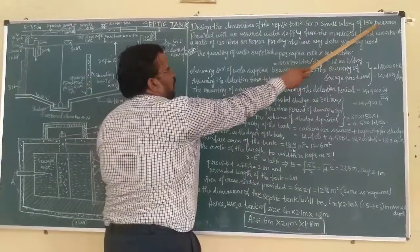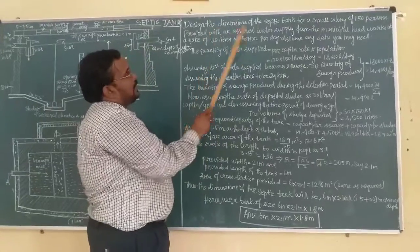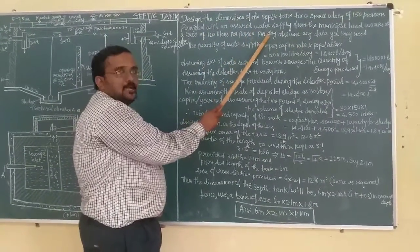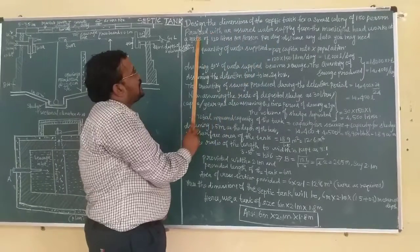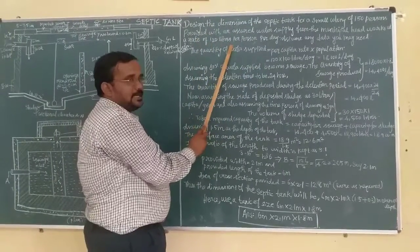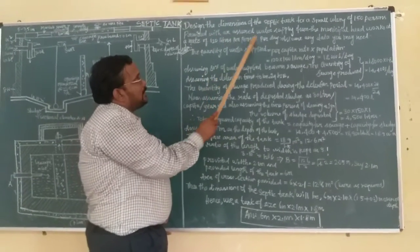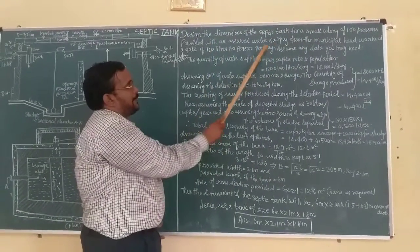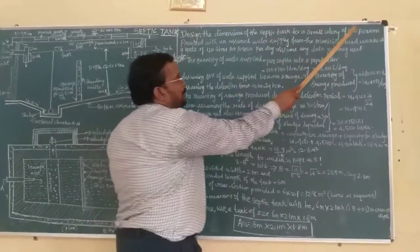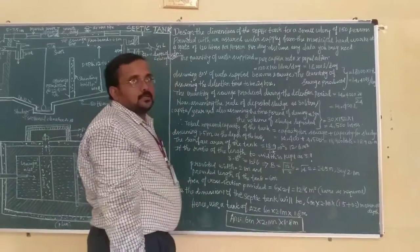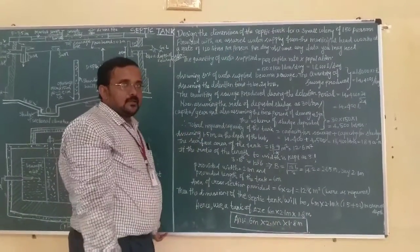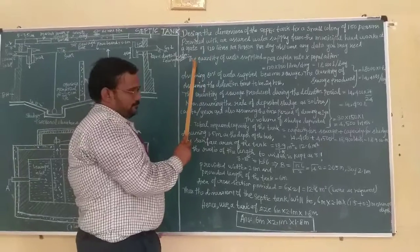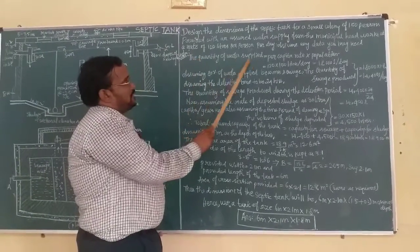In the question there are only two data: 150 persons are there in the colony and the water supply is 120 liters per person per day. This is the per capita supply. We have to calculate: for one person per day the water supply is 120 liters, so for 150 persons it means we have to design the septic tank.